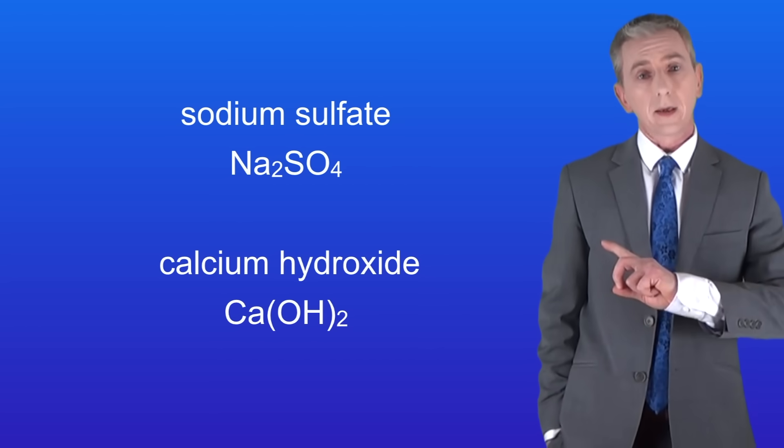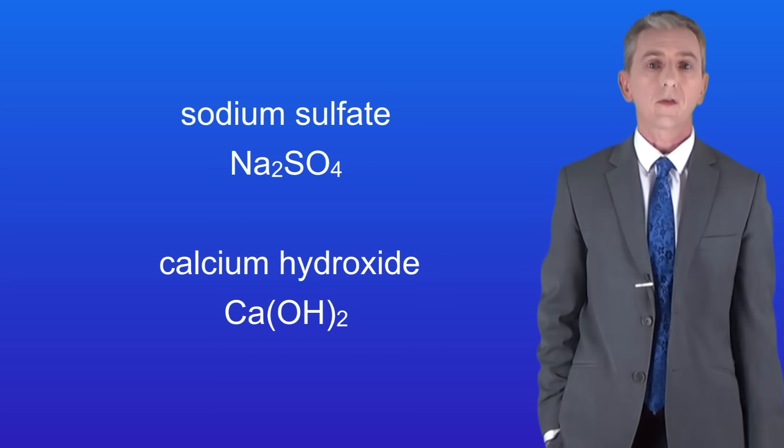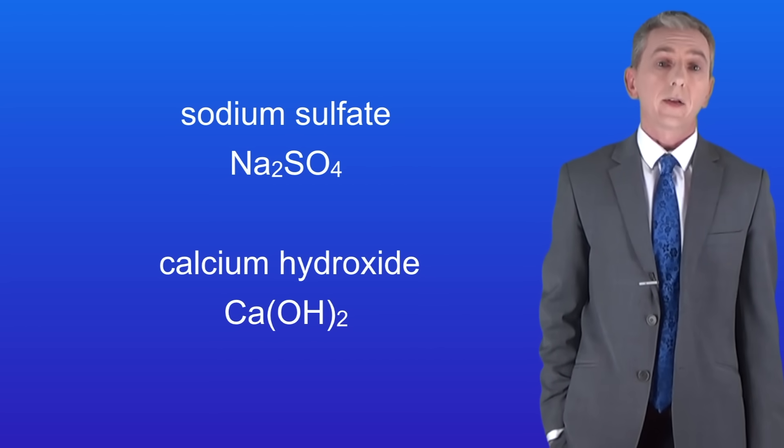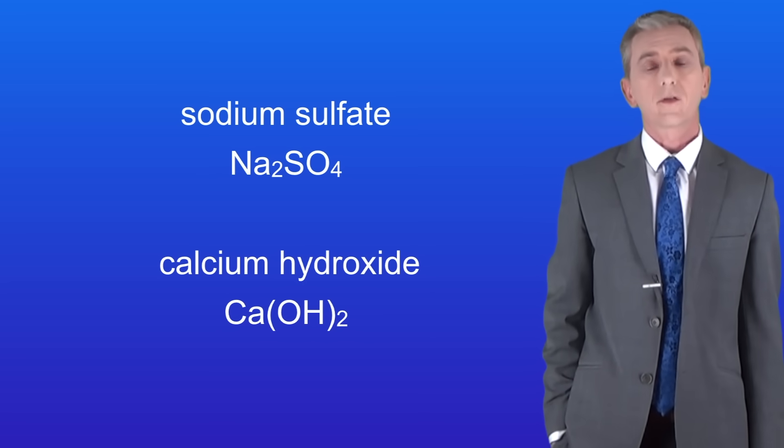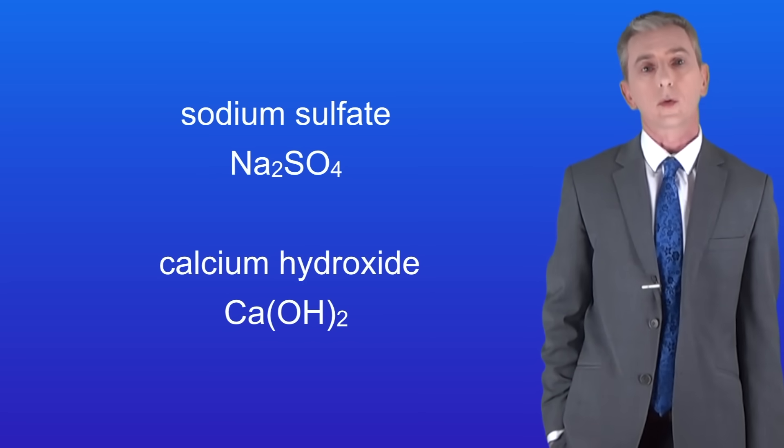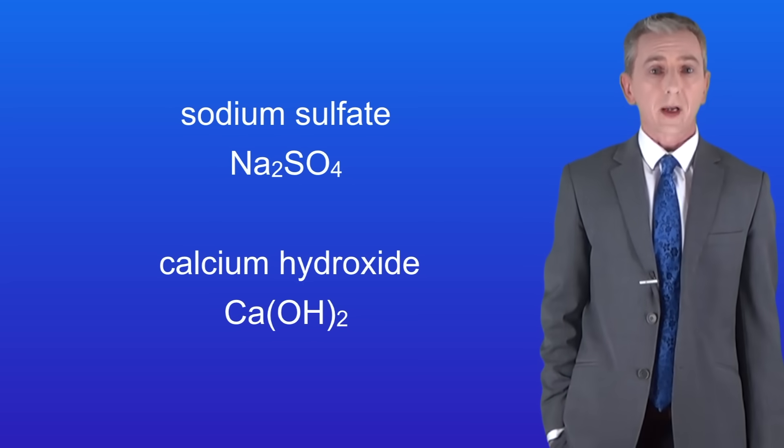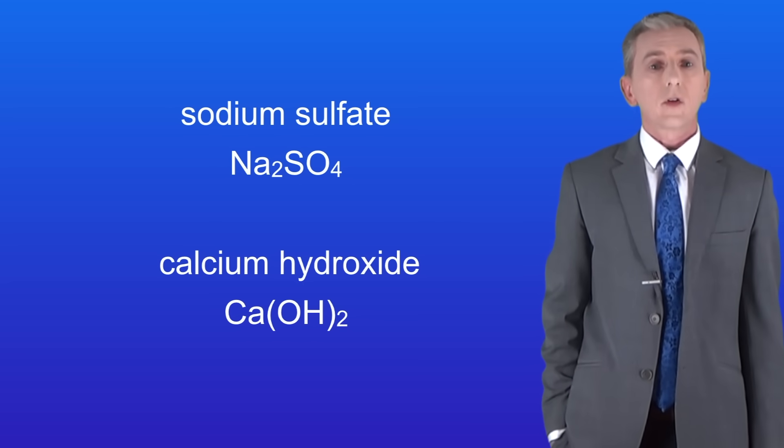I'm showing you here the ionic compound sodium sulfate which has the formula Na2SO4 and calcium hydroxide which has the formula Ca(OH)2. In the next video you're going to learn how to work out the formulas of compounds such as these. It's a really useful skill to learn and will help you a lot in chemistry.